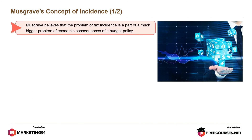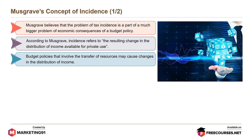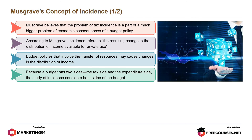The last concept is Musgrave's concept of incidence. Musgrave believes that the problem of tax incidence is a part of a much bigger problem of economic consequences of a budget policy. According to Musgrave, incidence refers to the resulting change in the distribution of income available for private use. Budget policies that involve the transfer of resources may cause changes in the distribution of income. Because a budget has two sides — the tax side and the expenditure side — the study of incidence considers both sides of the budget.